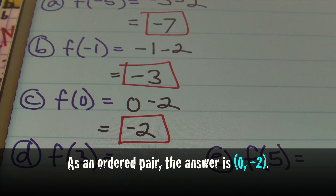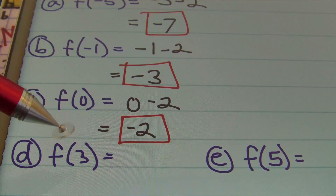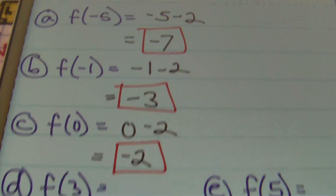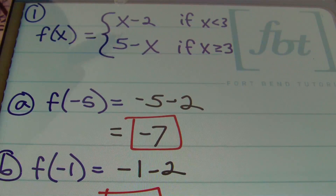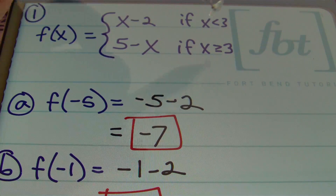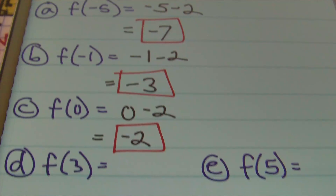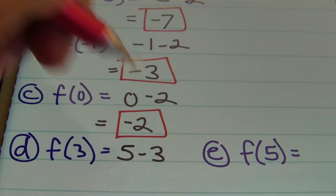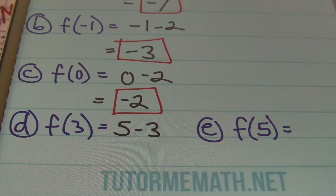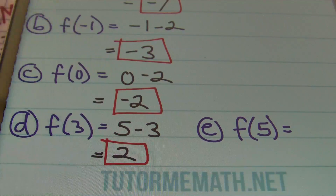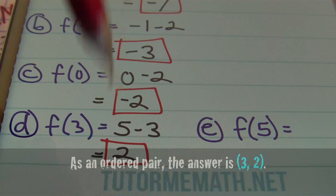For part d, x equals three. The condition says to use x minus two whenever x is less than three, but our condition also says to use five minus x whenever x is greater than or equal to three. Since x is three, we use the second part: five minus three, which equals two.